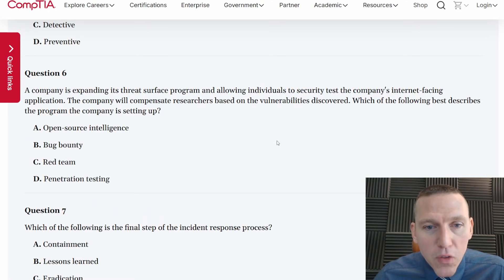A company is expanding its threat surface program and allowing individuals to security test the company's internet facing application. The company will compensate researchers based on the vulnerabilities discovered. This is a bug bounty, which of the following best describes the program. This is a long winded way of saying bug bounty. Companies allowing individuals to security test the company's internet facing application. So it's a web application. Individuals can test the web application. The company will compensate them. So if the company is compensating them based on testing, that's a bug bounty.